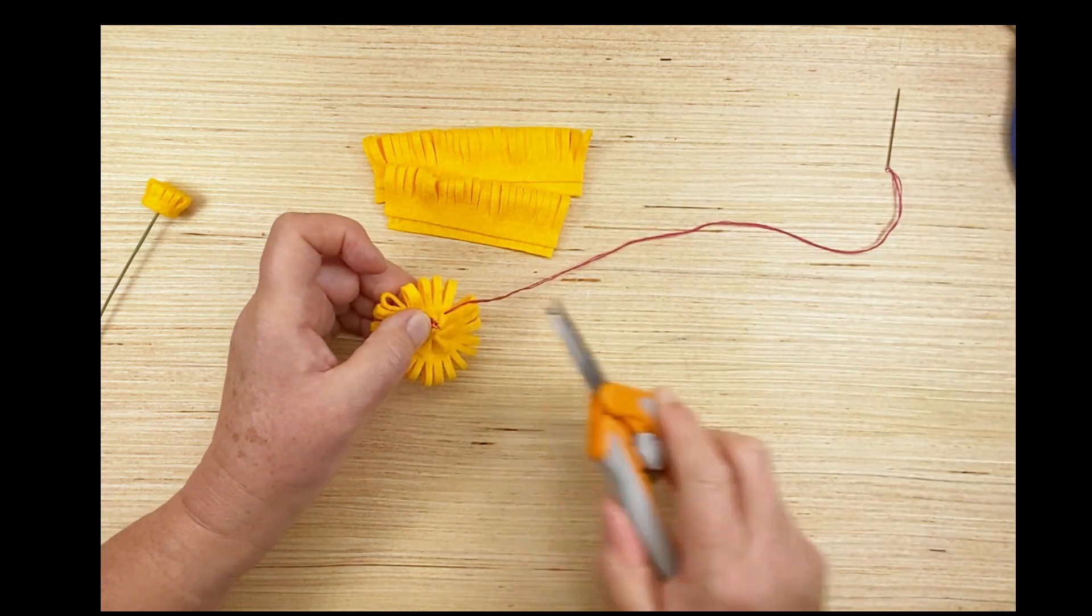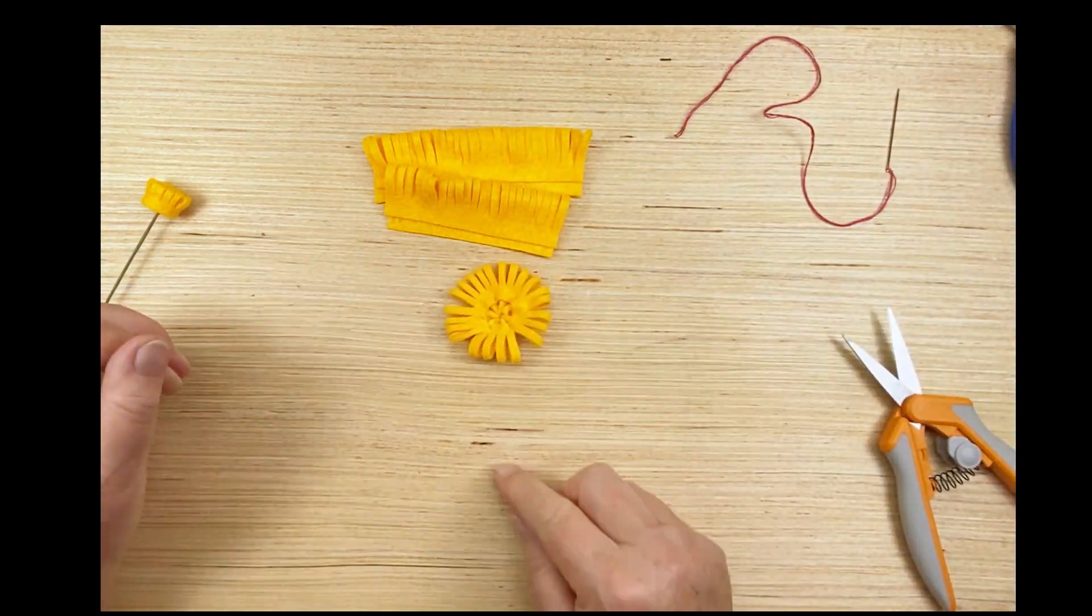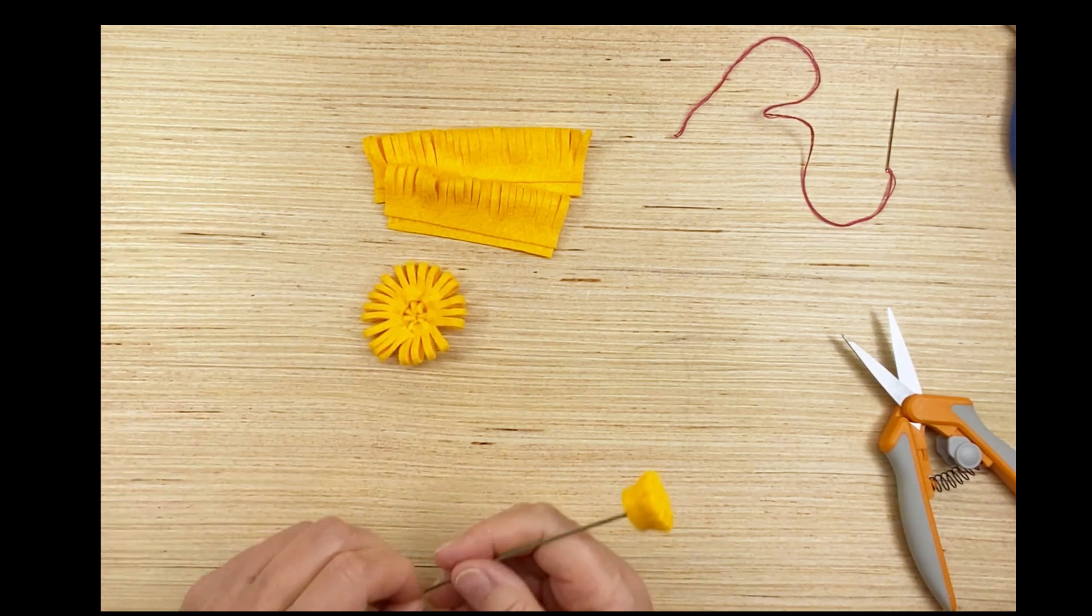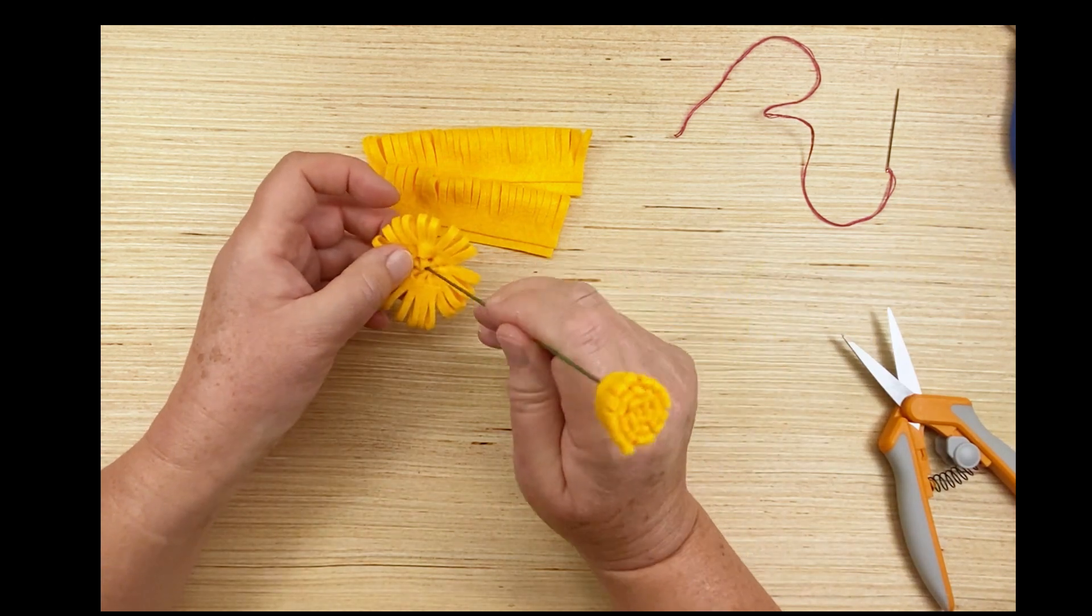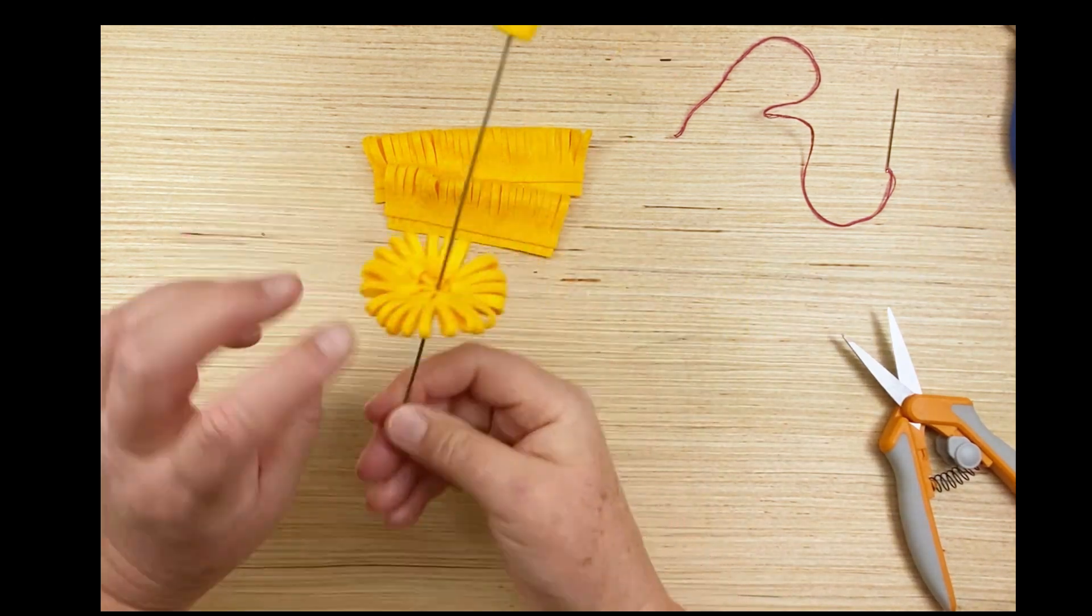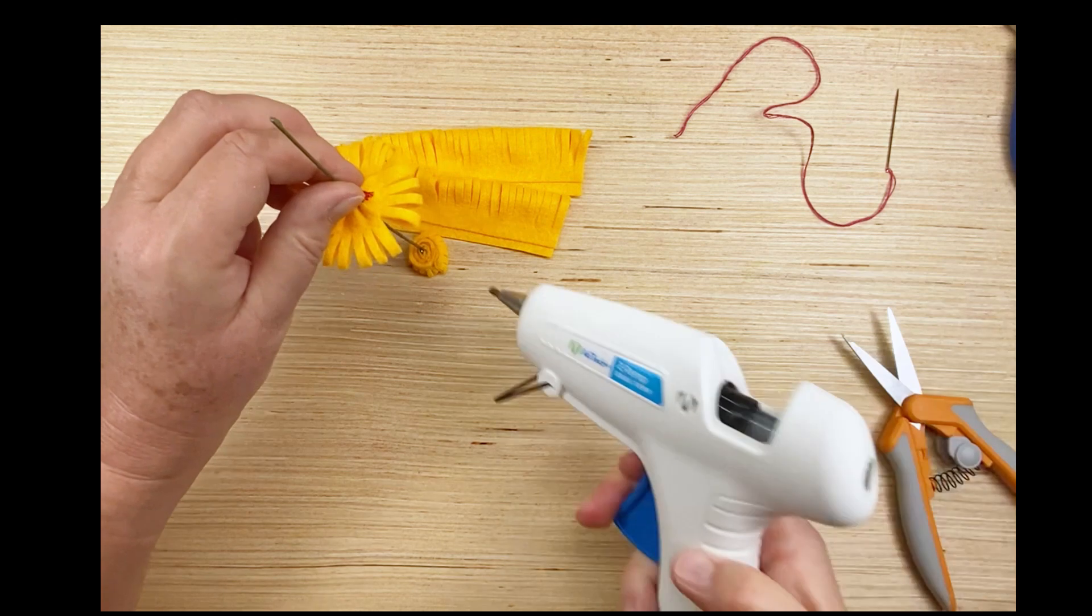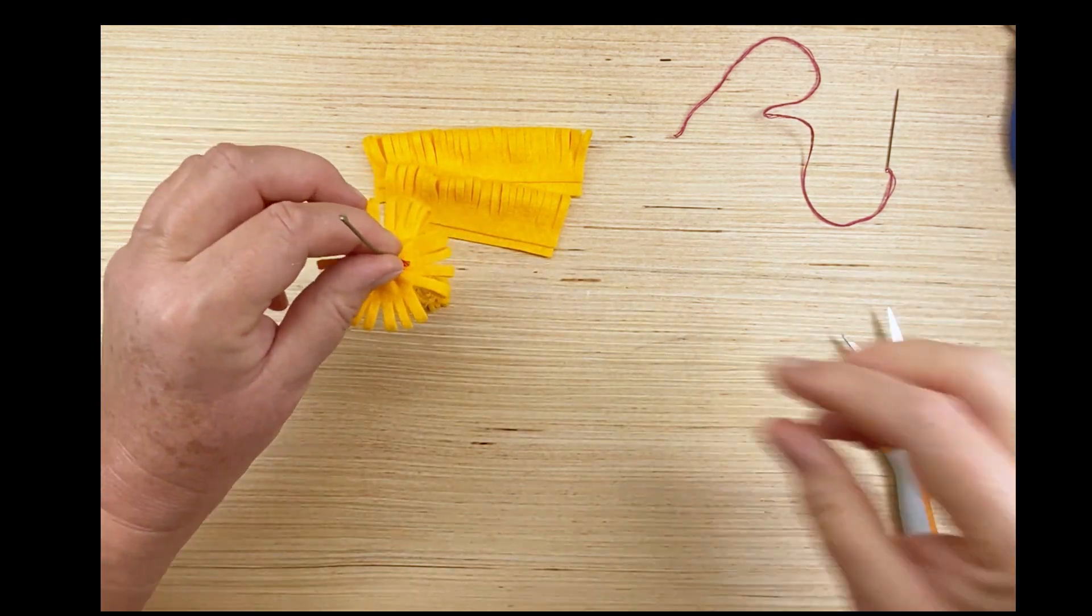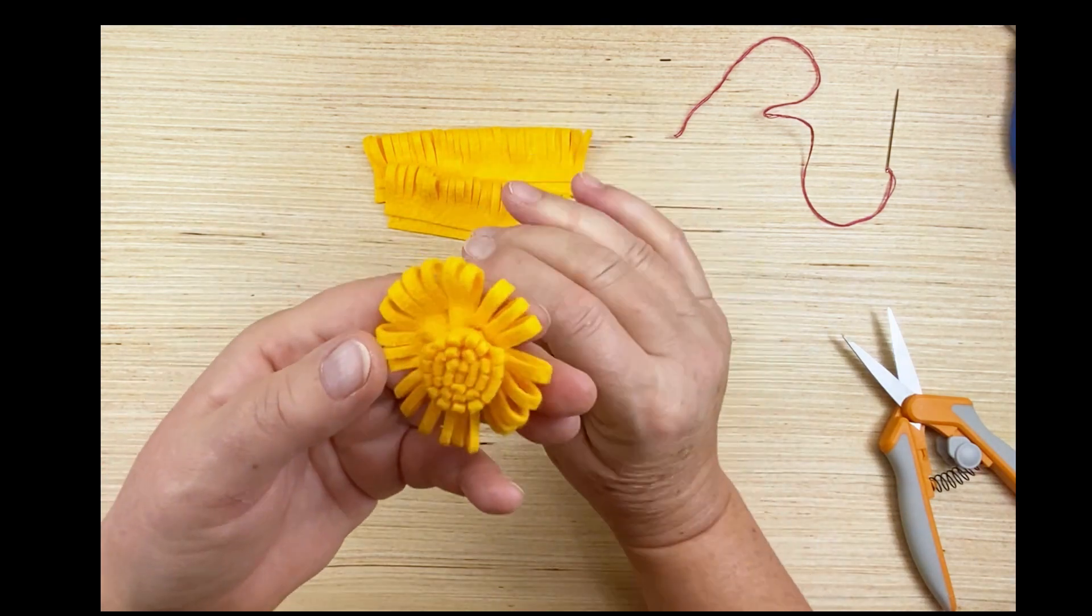We're going to snip that off and then now we're going to place that onto the center of the flower. Doesn't matter which way up you put this onto the stem. Just slide it onto the stem, put some glue on the base of the center, and put that first layer in position holding it in place for a few seconds for the glue to set.